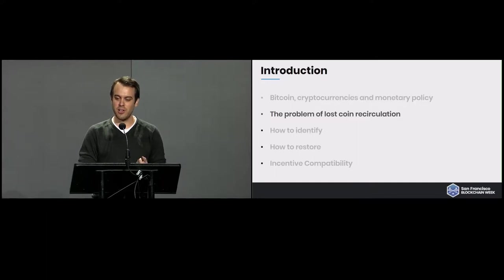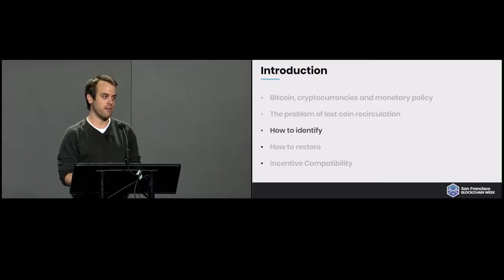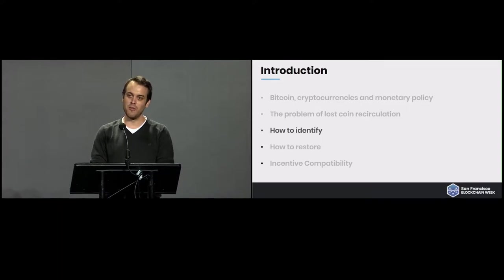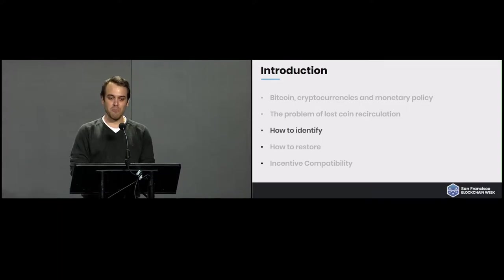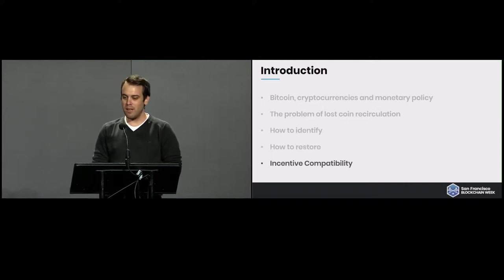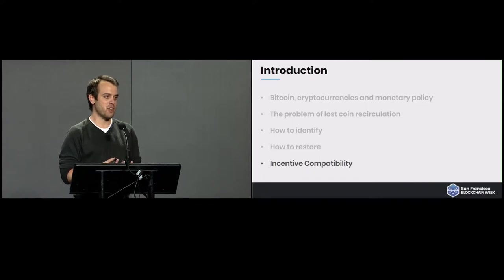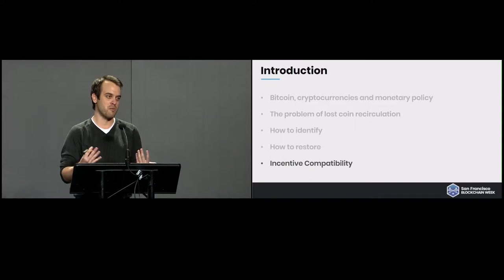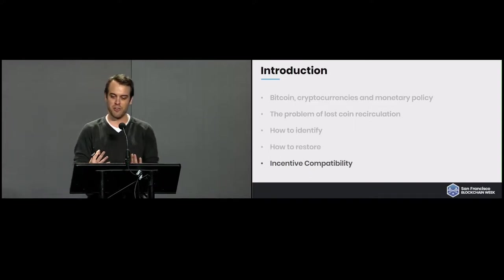The problem of lost coin recirculation is divided into two main problems. The first is how you actually identify a lost coin, because you can't really trust people to tell you they've lost X amount of dollars — you can't know for sure if they're telling the truth. The second problem is: even if you know how to identify how many coins are lost, how do you restore them into circulation? Since there's no central authority, we need decentralized models that produce the same results we'd expect from a centralized governing organization.